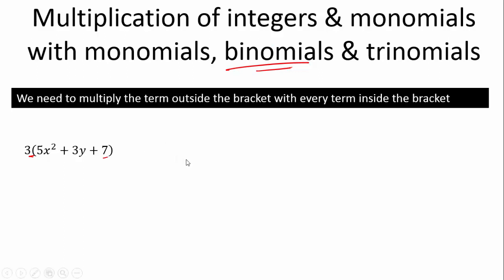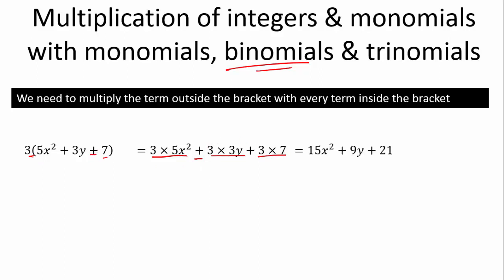So 3 multiplied by (5x² + 3y + 7) is the same as: 3 multiplied by 5x², plus 3 multiplied by 3y, plus 3 multiplied by 7. We're going to get rid of the multiplication sign, so we get 15x squared, plus 9y, plus 21 — because we simply multiply the coefficients together.